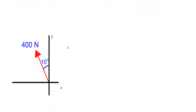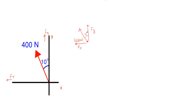We have one more force of 400 Newtons. Again, it's up and to the left, so FY will be upward and FX will be to the left. The 400 is at 10 degrees off of the Y, so we expect FY to be much larger than FX because this force is more vertical than horizontal. Completing the force triangle with the 10-degree angle off the Y, and copying FX up to form the triangle.